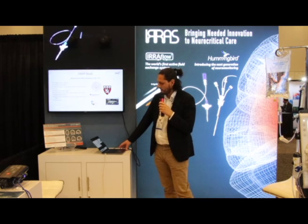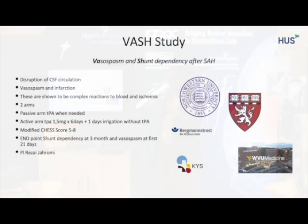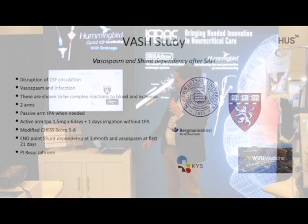Based on that, we have initiated the WASH study — the vasospasm and shunt dependency trial after SAH. The idea is to investigate whether we are able to remove bleeding from the subarachnoid space and reduce shunt dependency. We are going to start this trial during this year, and we have the same investigators involved as in the ARC trial.